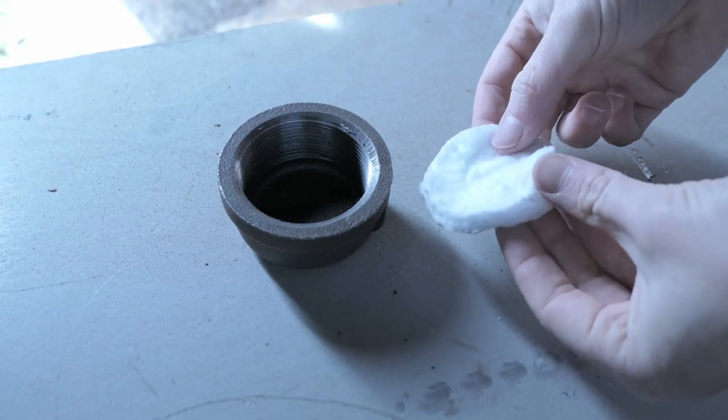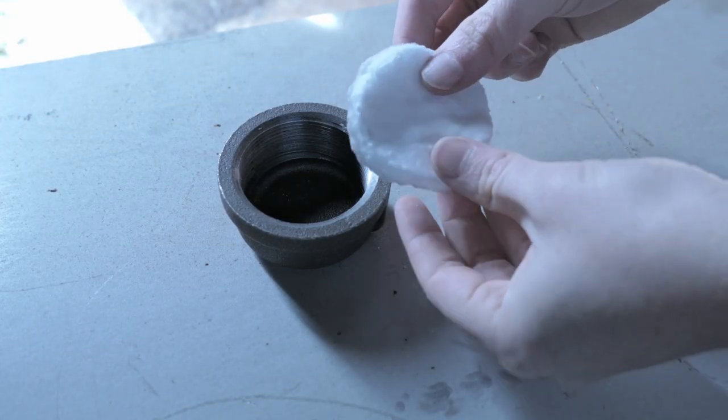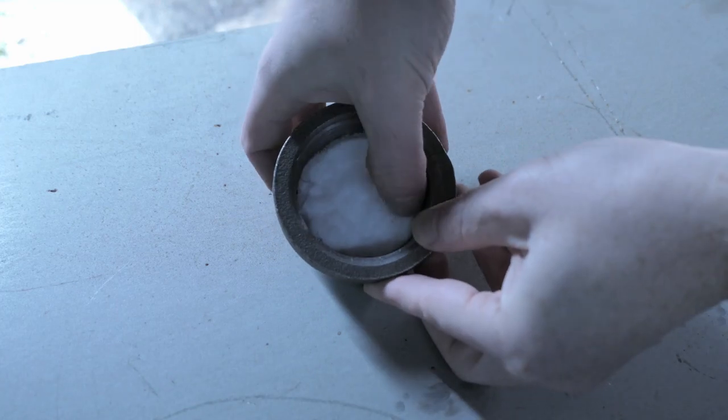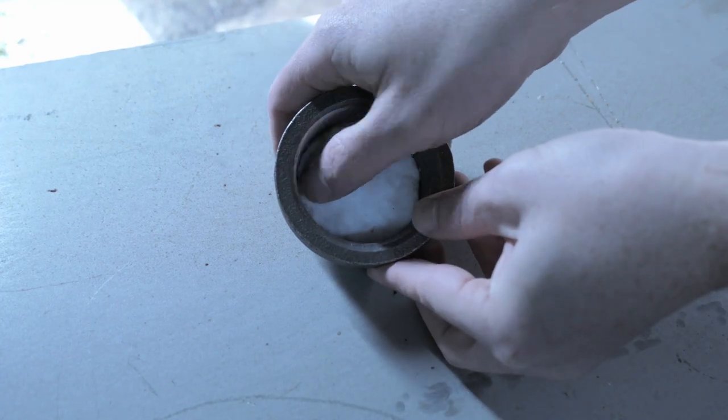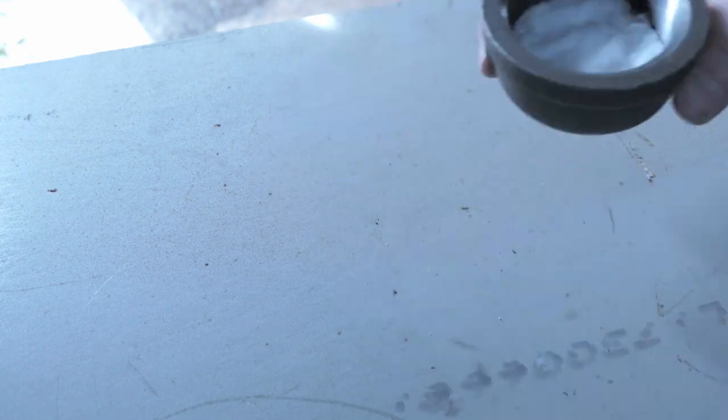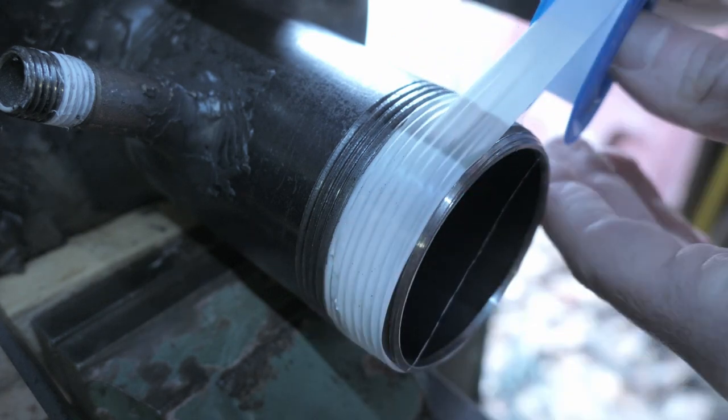And before I mount the whole system to my bench, I want to add a small pad of kaowool that I have left over from building my forge to the inside of that end cap. And this will hopefully help catch any of those precious metals that might fall in, in the event of another blowout.